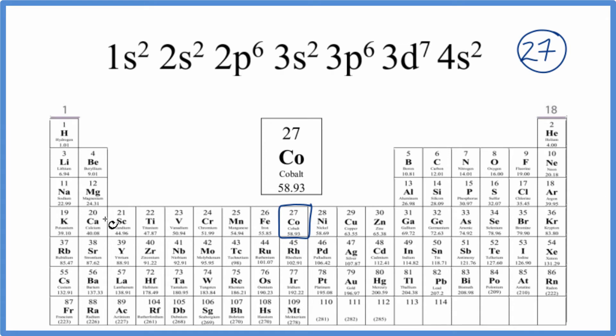So cobalt is 27, so we're looking at 18 argon right here. So we could put all 18 of these electrons in brackets and just write Ar like this, and this would be the abbreviated electron configuration.